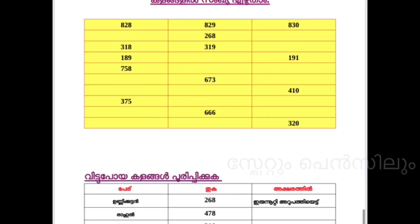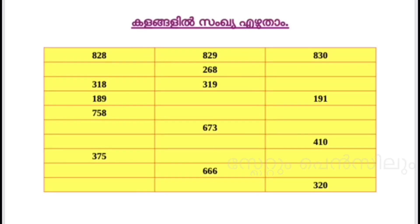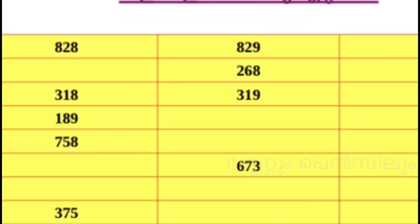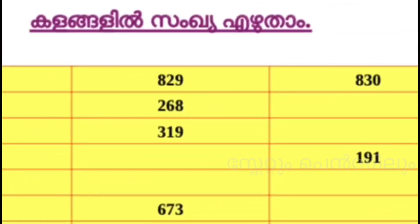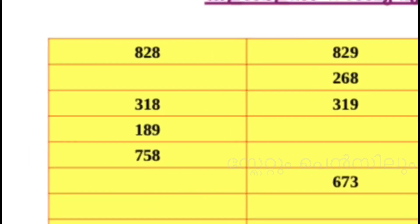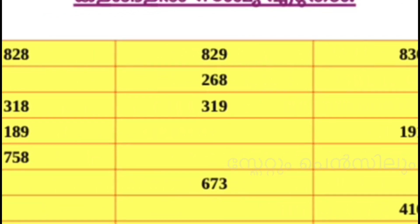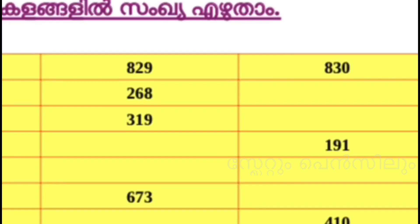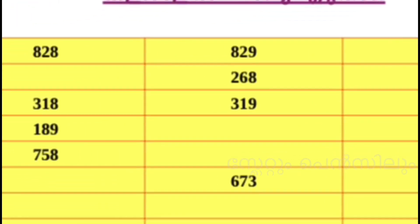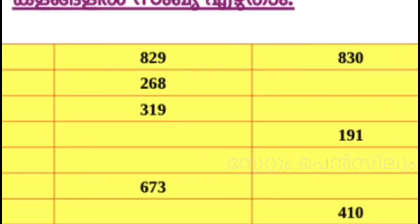What do you think about the next step? I will try to practice the next step. 828, 829, 830, 266. That is the first part of the square. 318, 319. That is the first part of the square. 819, 819, 819.